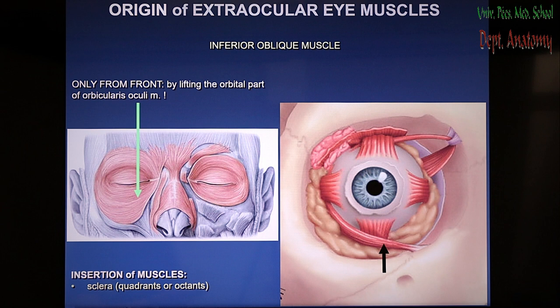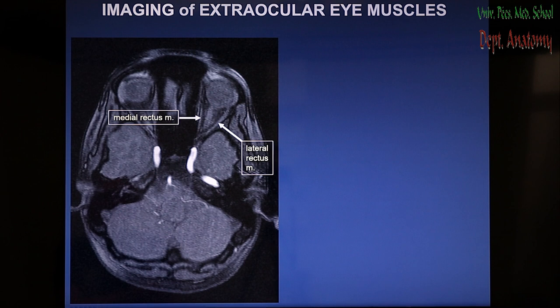Underneath the orbicularis oculi, the inferior oblique muscle is to be recognized, following the direction of the tendon of the superior oblique muscle. All these muscles insert to the sclera. To understand the function of an individual muscle, you must always keep in mind into which quadrant of the sclera the particular muscle inserts.